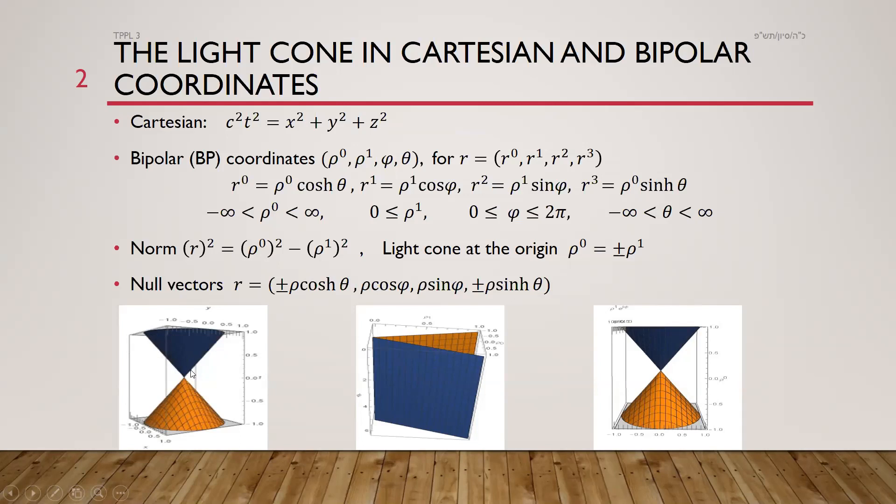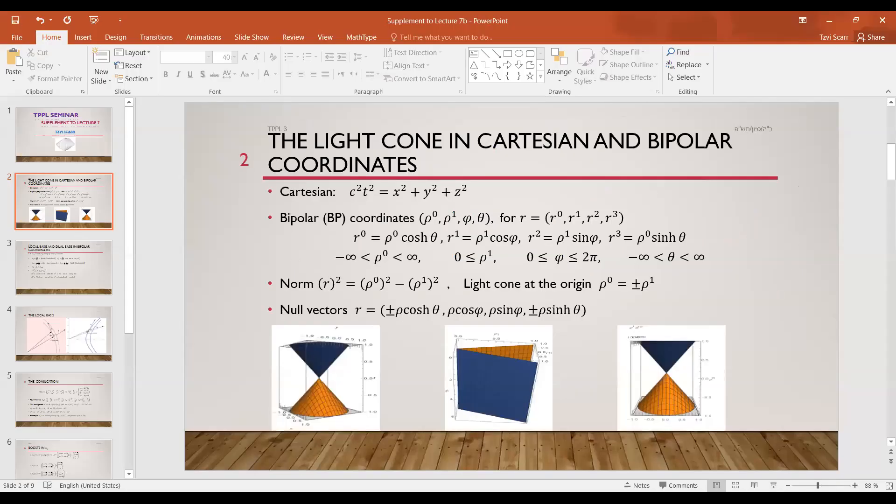And you get a cone, and I'll show you in a minute a better picture on Mathematica. In the bipolar coordinates we learned about last time, if you take the norm it's rho minus rho one squared, because cosh squared minus sinh squared is one and cosine squared plus sine squared is one. So this is the formula for the light cone, which means that rho zero equals plus or minus rho one. Rho one has to be positive but rho zero can be positive or negative.